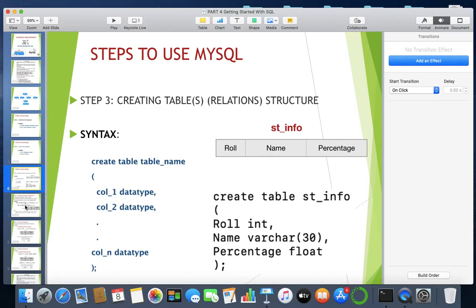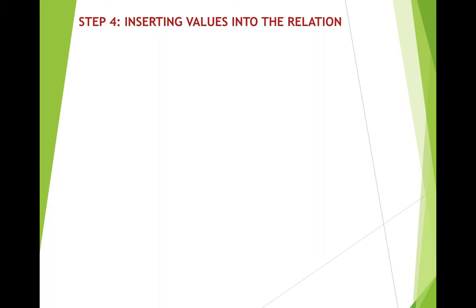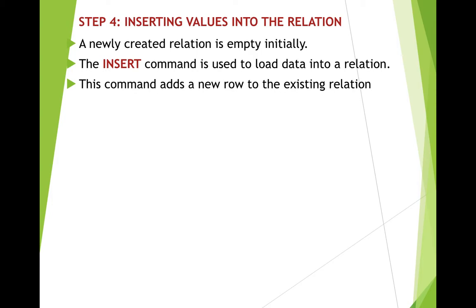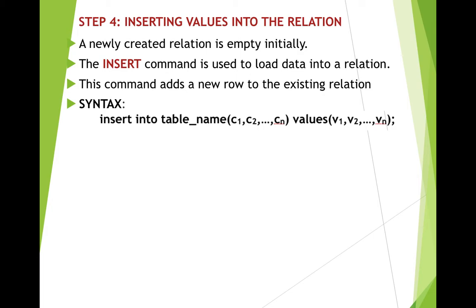Now let us go to the next step, step number 4: inserting values into the relation. A newly created relation is empty initially, so we need to insert values into it. The INSERT command is used to load data into a relation. After creating the structure of the table, we insert data using the INSERT command. This command adds a new row to the existing relation. The syntax is: INSERT INTO table_name (column names) VALUES (values). There is also a more concise form where we eliminate the column names — the values must then be in the same order in which the columns were created.